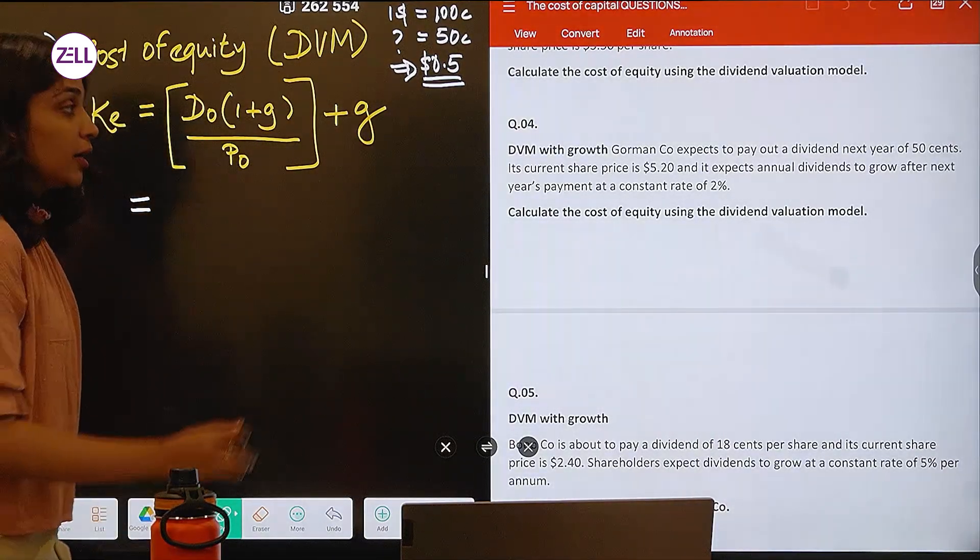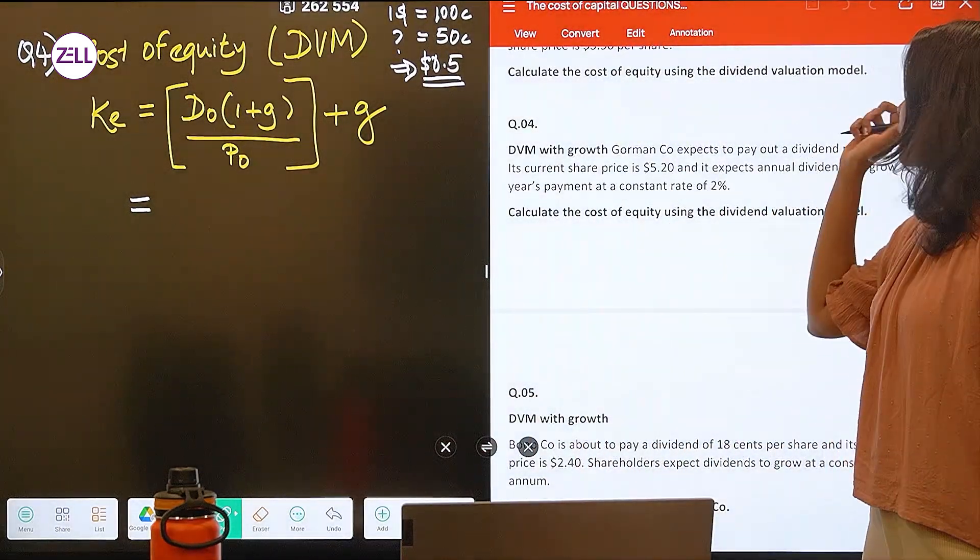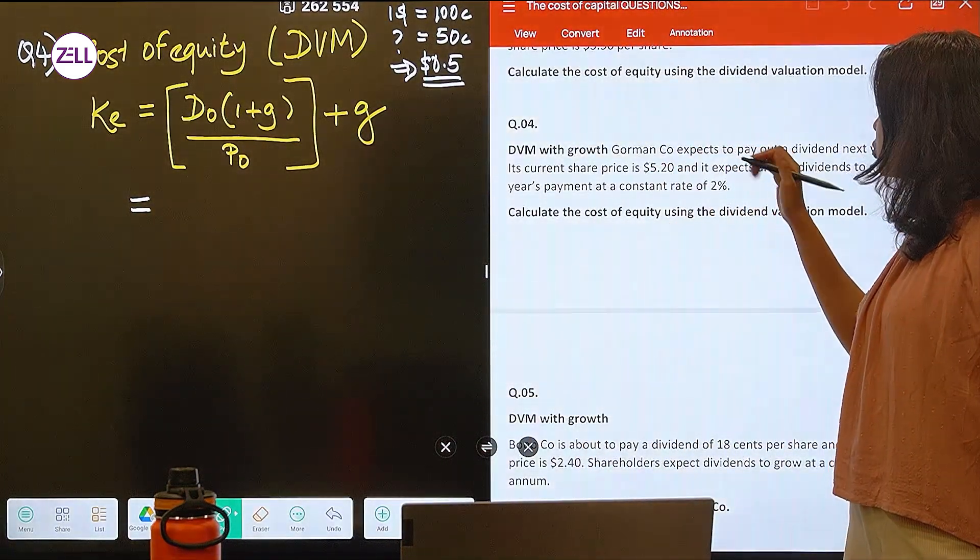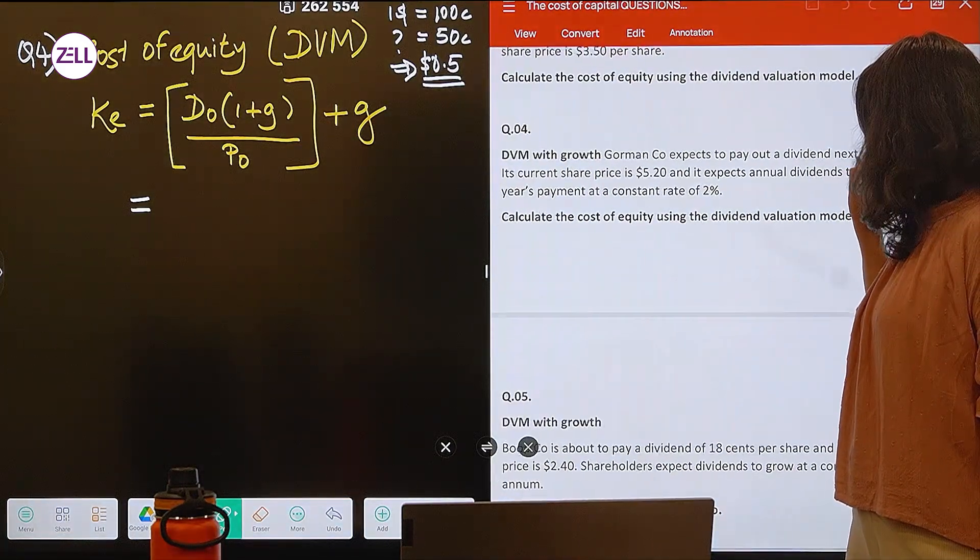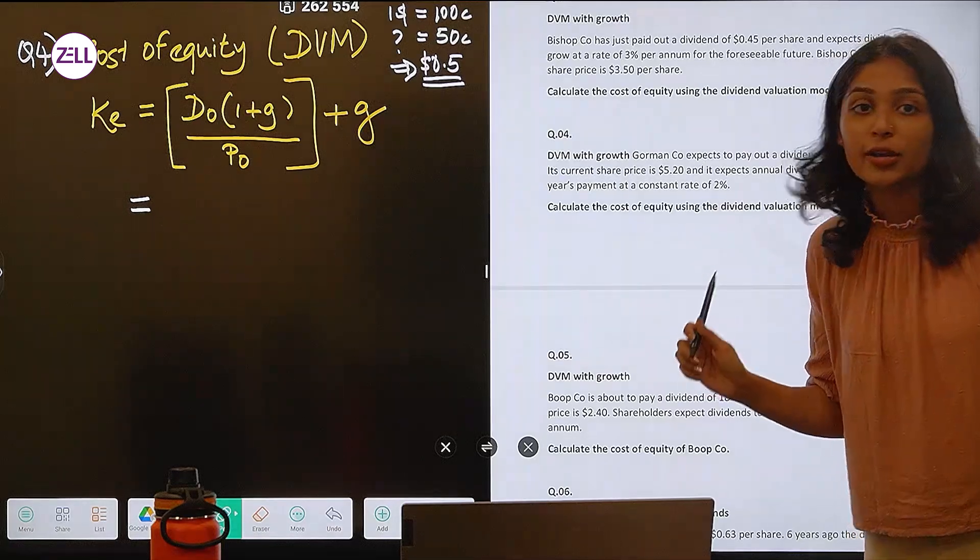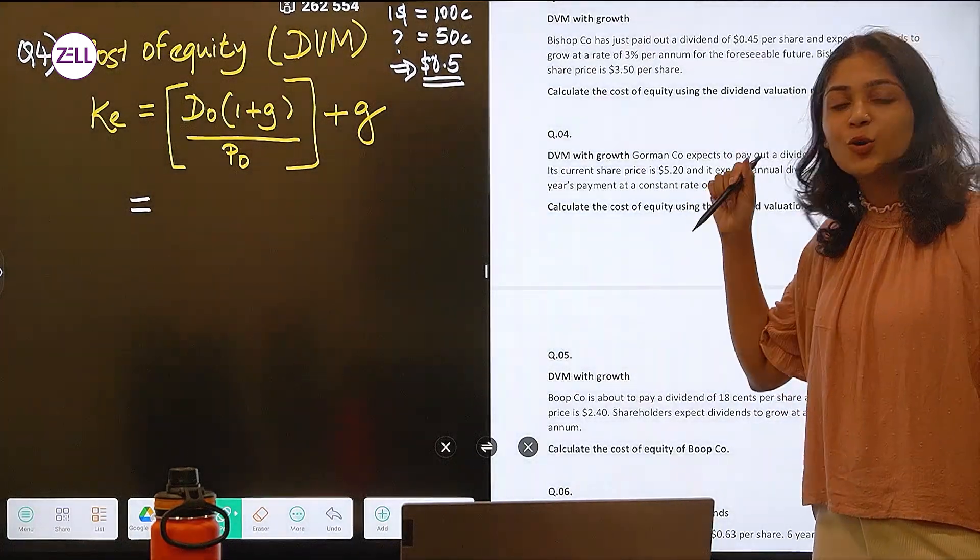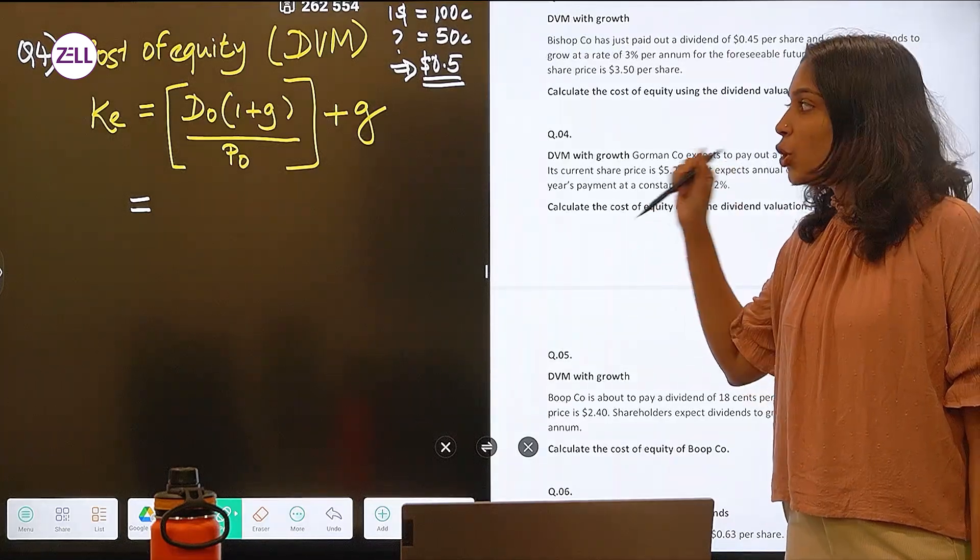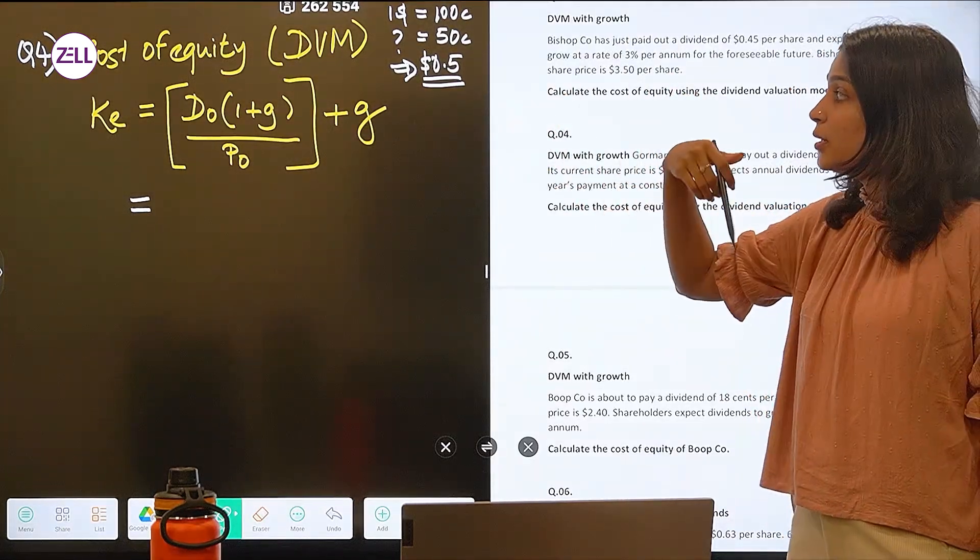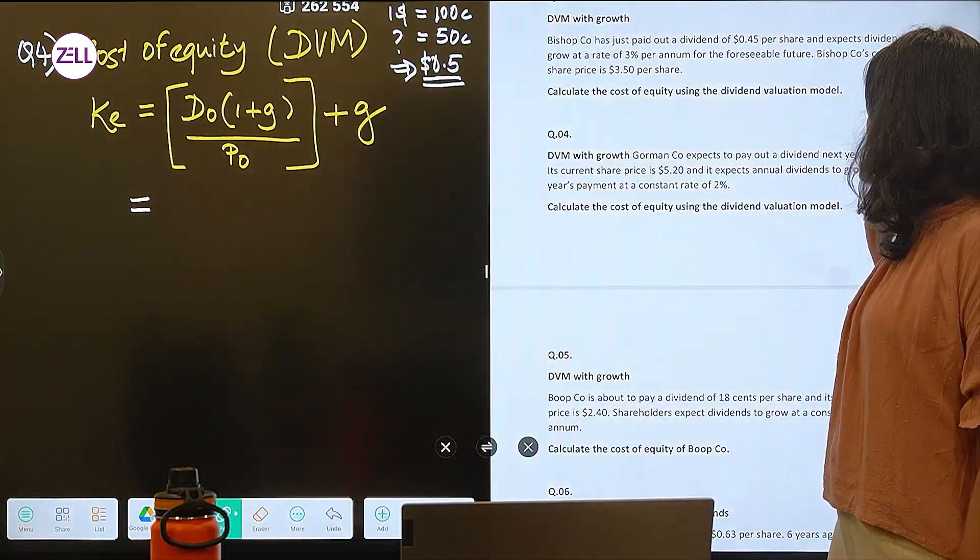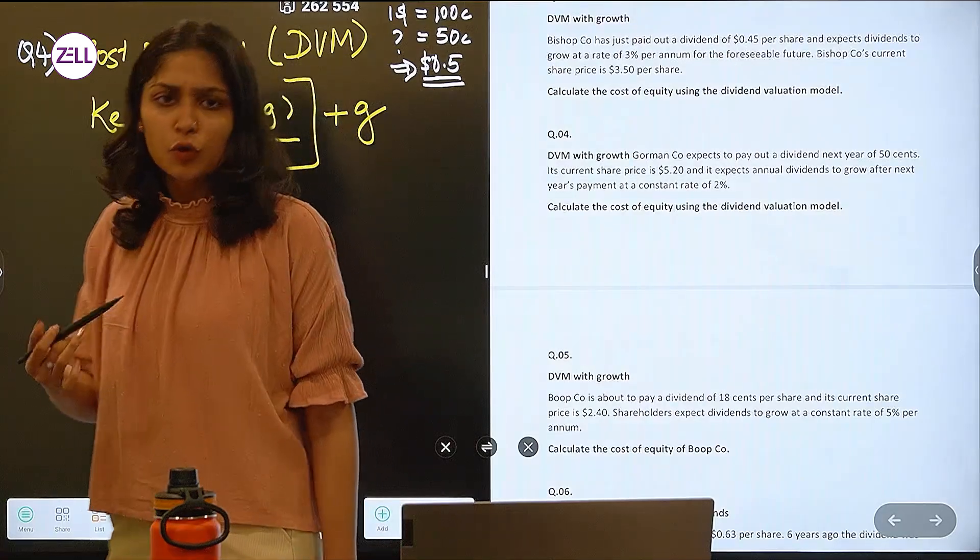But look at this question carefully. They are saying that Gorman expects to pay out a dividend next year. So this next year is an important aspect in the question. Which means that we are talking about not D0. D0 means current dividend. They have already given to us in the question next year dividend. A lot of students end up doing this mistake.